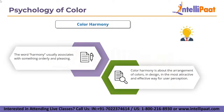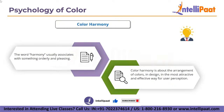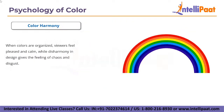Color harmony is all about arrangement of colors in the most attractive and effective way for user perception. When colors are organized, viewers feel pleased and calm, while disharmony in design creates feelings of chaos and disgust. Color balance is vital in design since users make their perception of a website or application on the first look — colors have a big influence.